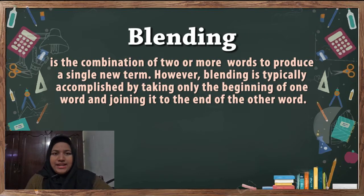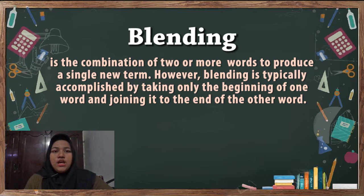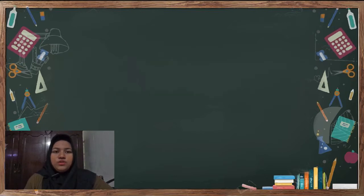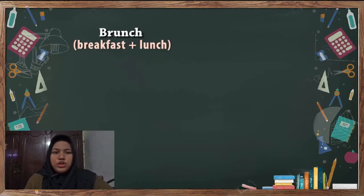Second is blending. Blending is the combination of two or more words to produce a single new term. However, blending is typically accomplished by taking only the beginning of one word and joining it to the end of the other word. An example of a typical blend is brunch, in which the beginning of the word breakfast is joined with the ending of the word lunch.